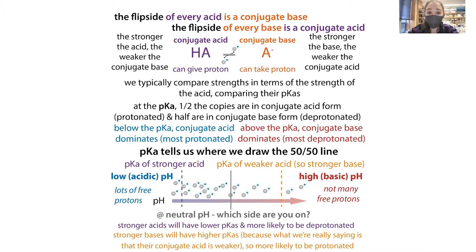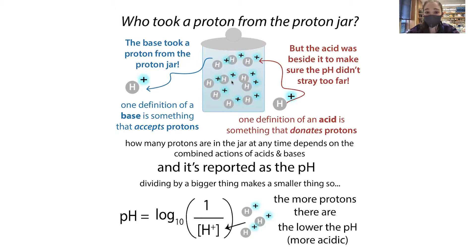At the pKa, half are in the conjugate acid form and half are in the conjugate base form. If you have a really strong acid, it's not going to want to take a proton unless there are a lot of protons around — it kind of can't resist. You can think of it as a proton jar: strong acids don't want to take a proton, but if there's a ton of protons available they just can't help it. Conversely, a strong base is going to want to take a proton even if very few are available. How greedy they are for protons is essentially what the pKa is measuring.